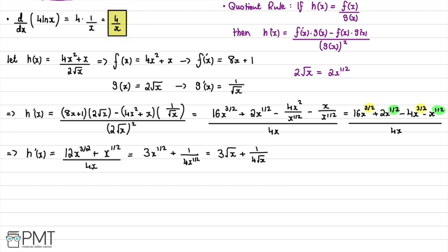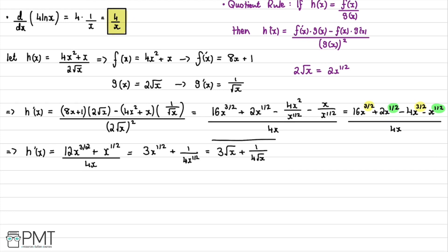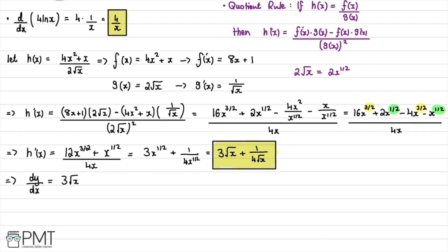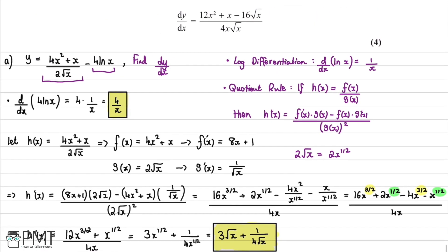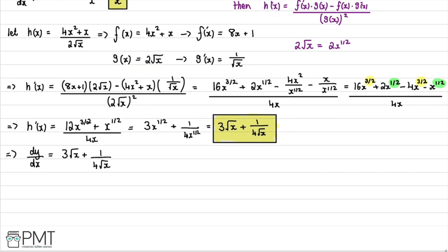Now we remember back to our previous part where we had the derivative of the ln term as 4/x. We combine these to find dy/dx. Since we were subtracting 4ln(x) in the original equation, we subtract 4/x for its derivative. So dy/dx = 3√x + 1/(4√x) − 4/x.